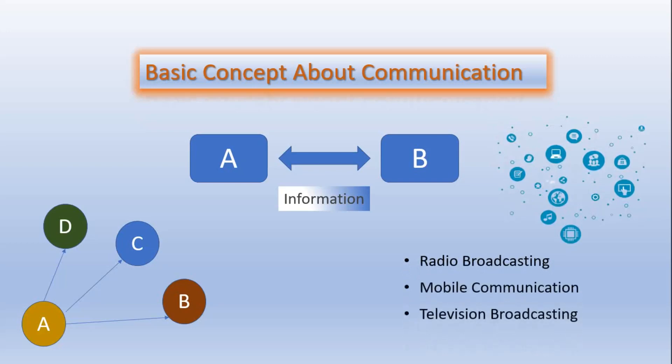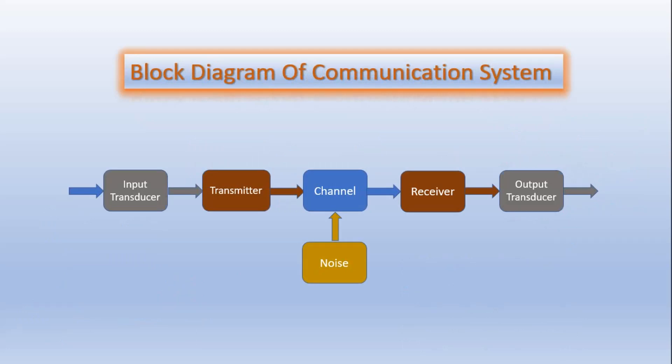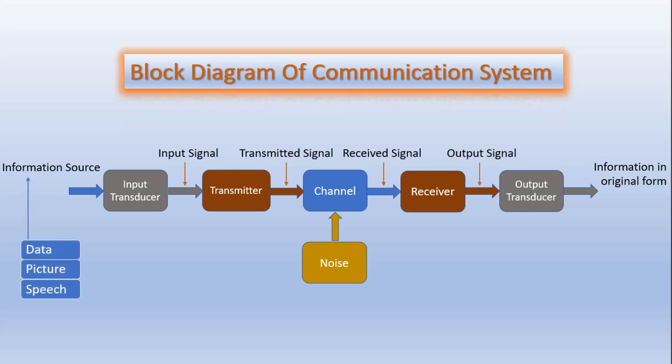This is the block diagram of the communication system. First part of this block diagram is information source. The function of information source is to produce the required message which has to be transmitted. This information source could be data, picture, or it could be speech also.